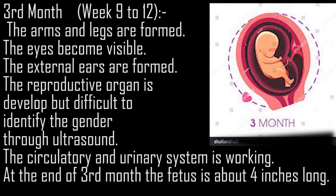Third month, week 9-12. The arms and legs are formed. The eyes become visible. The external ears are formed. The reproductive organs are developed, but it is difficult to identify the gender through ultrasound. The circulatory and urinary systems are working. At the end of the third month, the fetus is about 4 inches long.